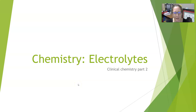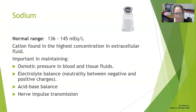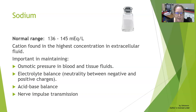Hi everybody, Dr. A again with Basics of Chemistry. This video is going to look at electrolytes, more specifically sodium, potassium, and chloride. Let's start with sodium. A normal range for sodium is 136 to 145 milliequivalents per liter. It is the cation found in the highest concentration in extracellular fluid, meaning plasma and interstitial fluid.